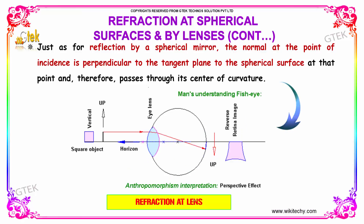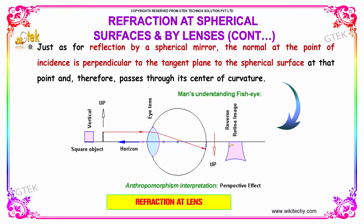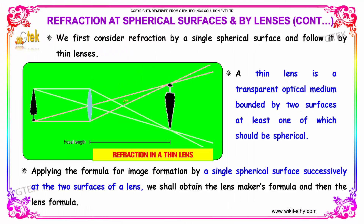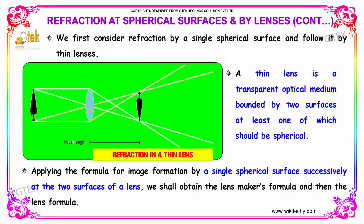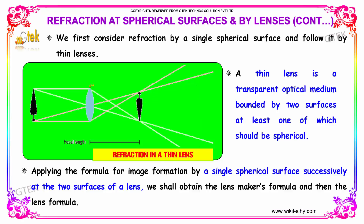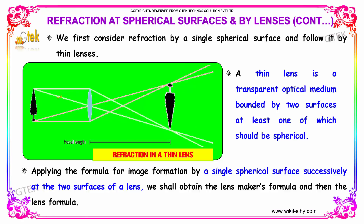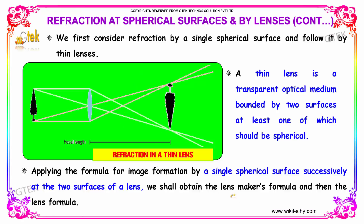This is how refraction at a lens is happening. This is the object - it is up - this is your eye lens, and you are able to see it is in the down position, the reverse of the retina position based on the objects hitting the lens. We first consider the refraction by a single spherical surface and follow it by thin lenses. A thin lens is a transparent optical medium bounded by two surfaces, at least one of which should be spherical. We apply the formula for image formation by a single spherical surface successively at the two surfaces of the lens, and we shall obtain the lens maker's formula and then the lens formula.